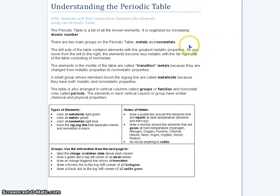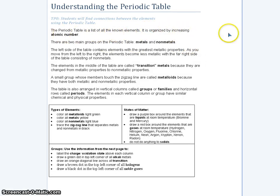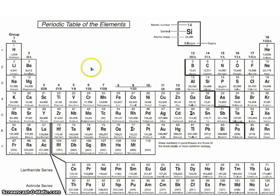Let's study it more carefully. The list of all the known elements is organized by increasing atomic number. We've already looked at the atomic number — the number of electrons and protons.